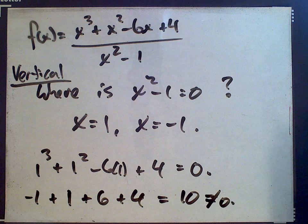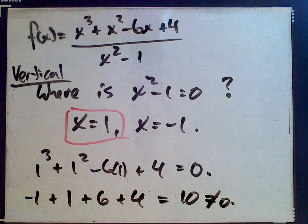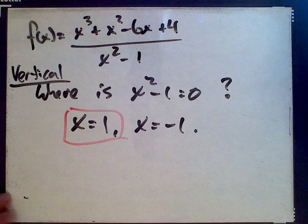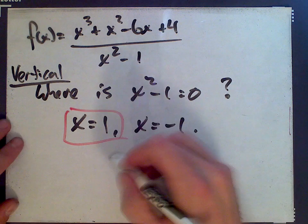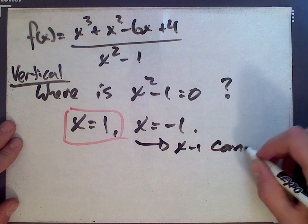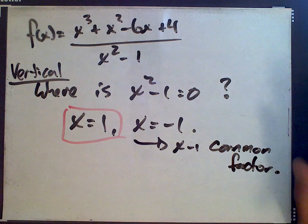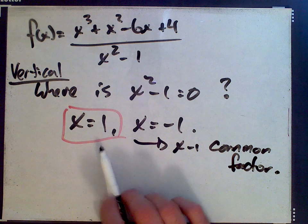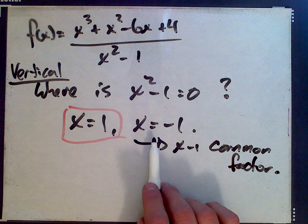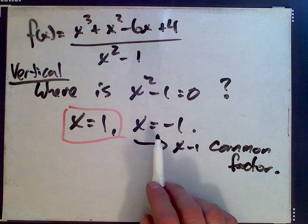So there's a root, a common factor at x equals 1 in the numerator and denominator. So we need to deal with that first. This is x minus 1 is a common factor. We really don't have to take it much further than this. The common factor won't give us an asymptote, but this root of the denominator will. So we see we have one vertical asymptote.